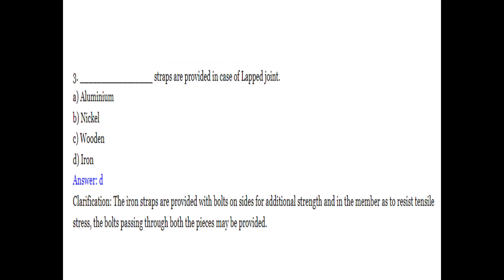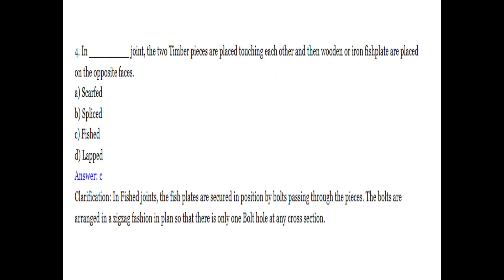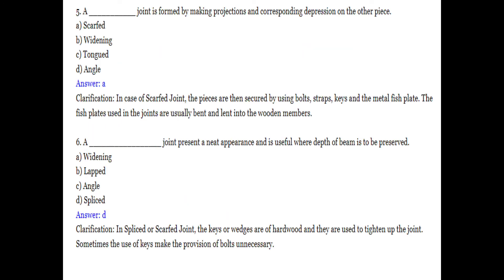Iron straps are provided in case of a lapped joint to give additional strength and resist tensile stress, secured with bolts. For the fished joint: two timber pieces are placed touching each other and wooden or iron fish plates are placed on opposite faces — option C, fished joint. The scarfed joint is formed by making projections and corresponding depressions on the other piece. The spliced joint presents a neat appearance and is useful where the depth of the beam is to be preserved.